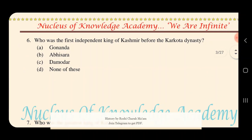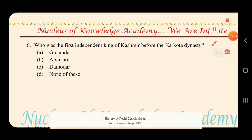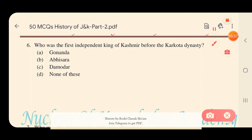Question 6: Who was the first independent king of Kashmir before the Karkota dynasty? Options: A) Gonanda, B) Abhisara, C) Damodar, D) None of these. The right answer is option A — Gonanda was the first independent king of Kashmir before the Karkota dynasty.